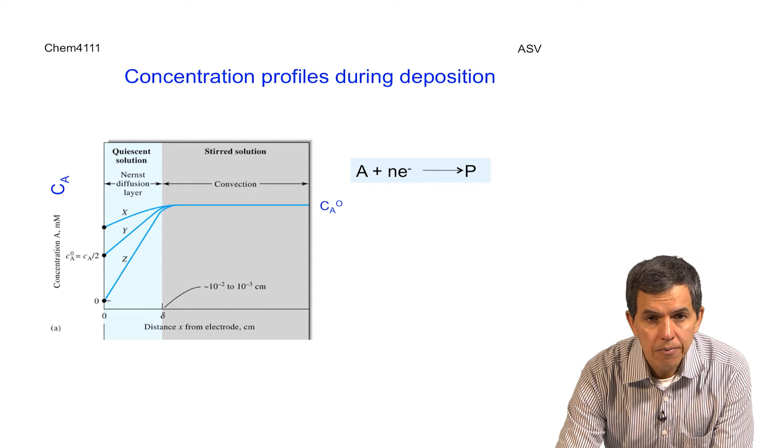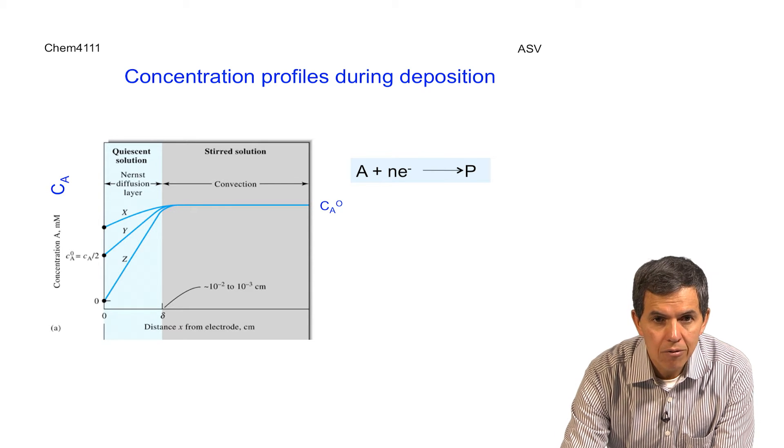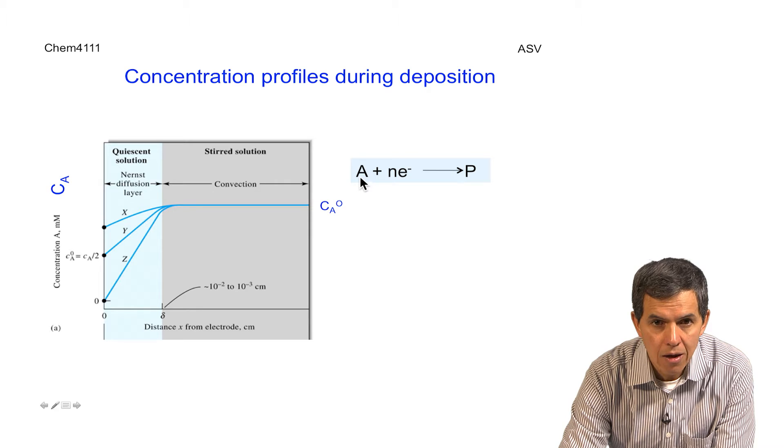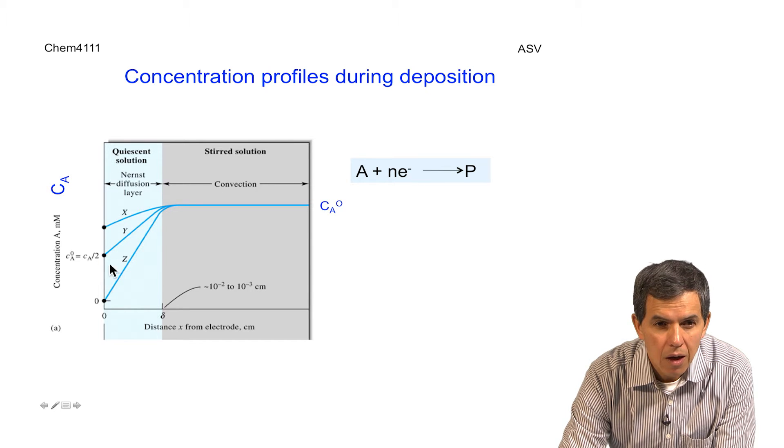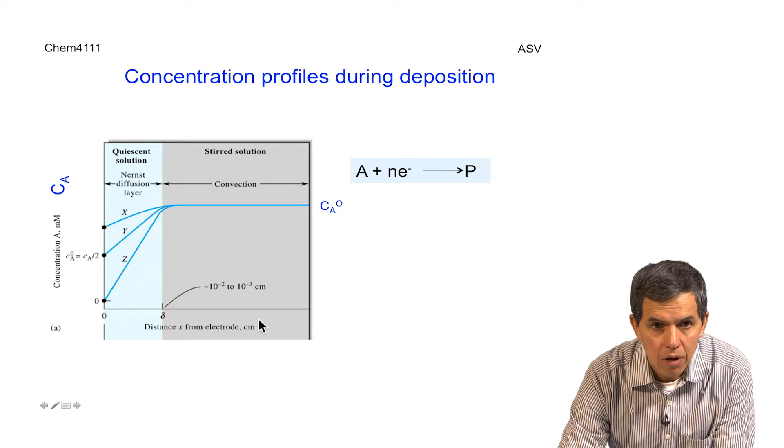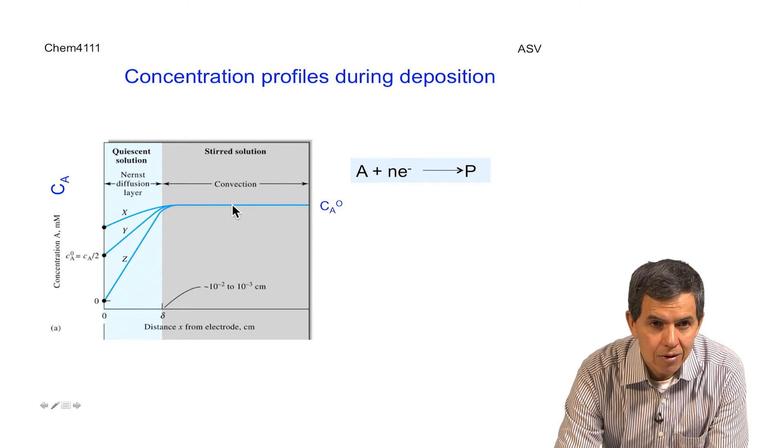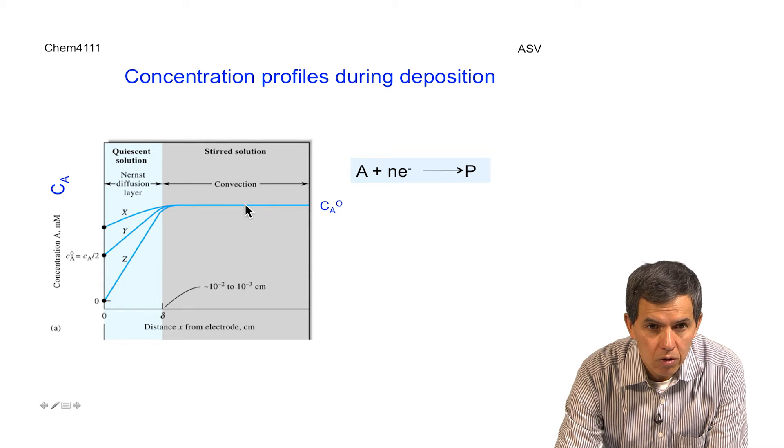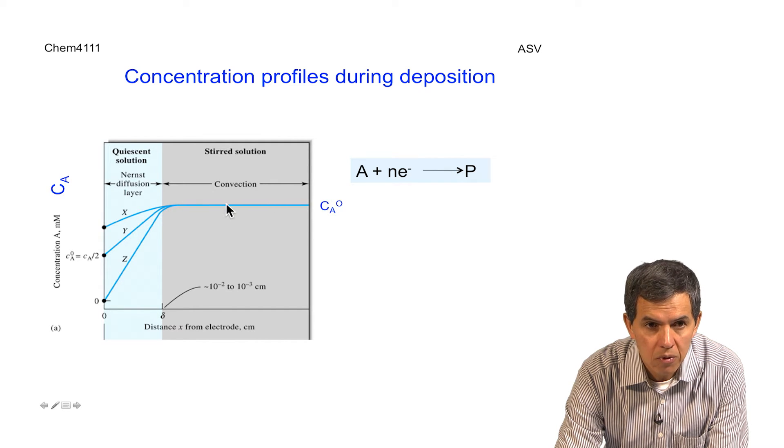During deposition, we also observe several stages at which the reduction of the species represented here by A to form the product P will occur. Here we have a diagram representing the surface of the electrode and the distance from the surface of the electrode. And we have the stagnant region, or the Nernst diffusion layer, and the stirred solution. What we can see here is that at time zero, the concentration of the species A, the oxidized species, is going to be basically the same all the way across from far away in the bulk solution up to the surface of the electrode.